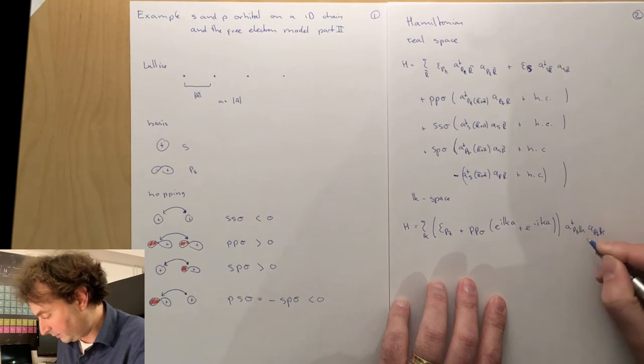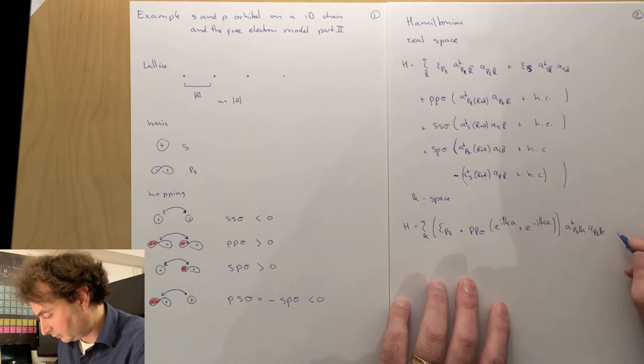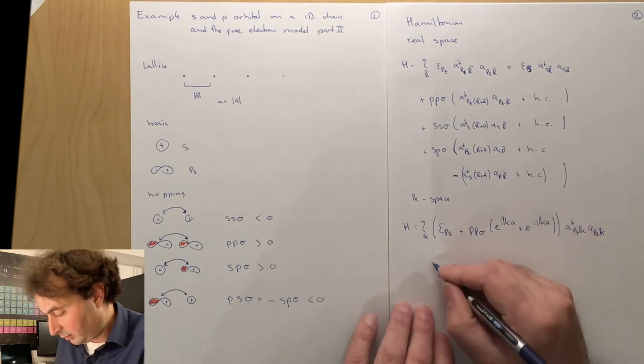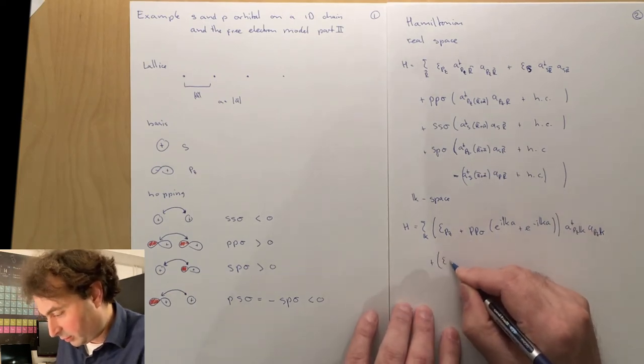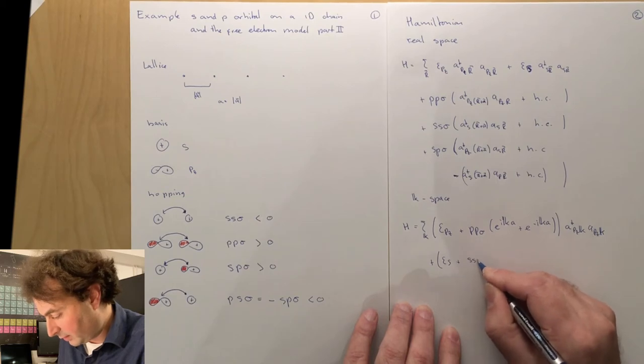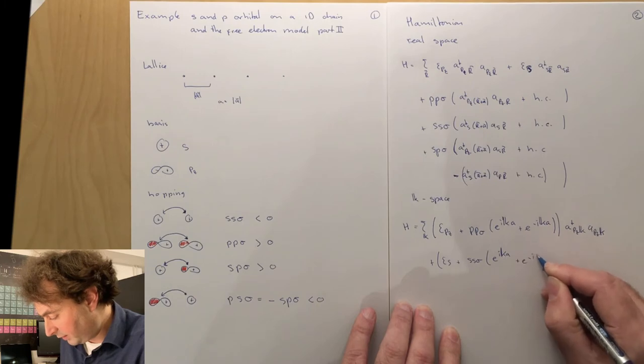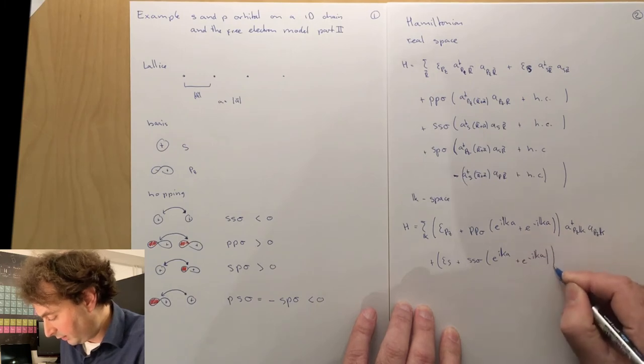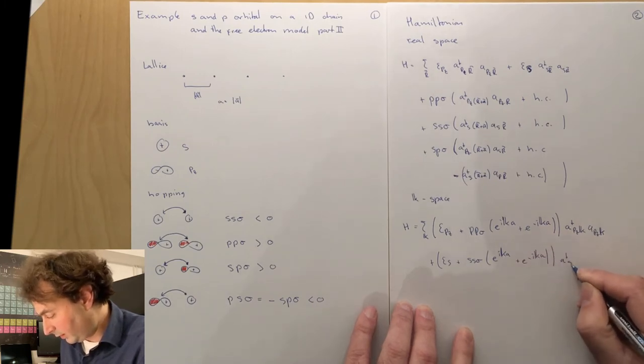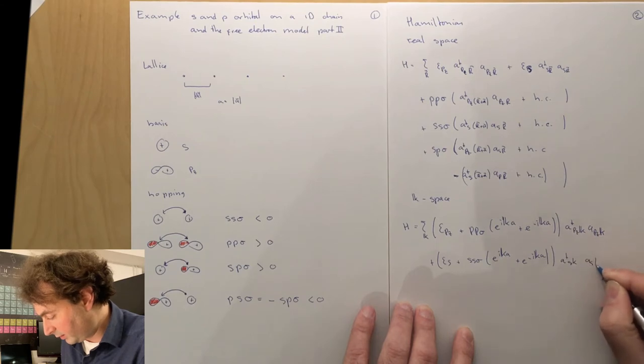Plus the same for the s orbital. Epsilon s plus ss sigma times e to the ika plus e to the minus ika, a dagger s k, as k.